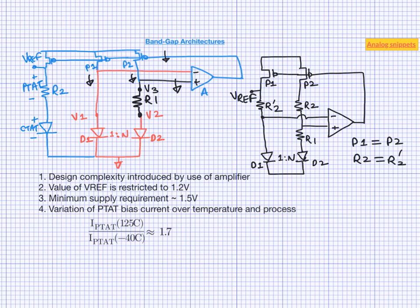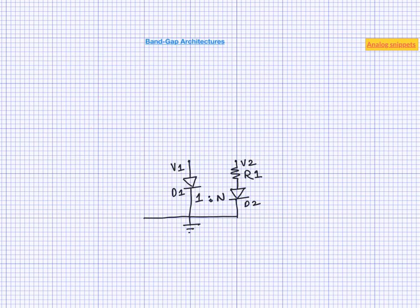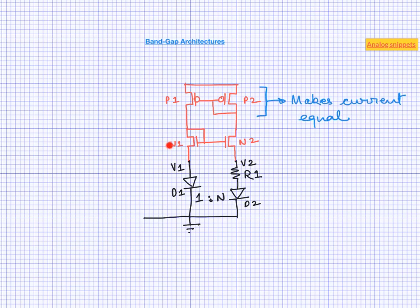If design complexity and area increase due to the amplifier is your main concern, there is another architecture to consider. Recall that for this circuit to work, the voltage across and current into both branches must be equal. One way to ensure this is with a current conveyor. A current mirror formed by pMOS transistors P1 and P2 ensures equal currents in both branches. The nMOS transistors share the same gate voltage and carry the same current, giving them equal gate-to-source voltages and therefore making V1 and V2 equal, provided P1 and P2 are equal in size, and likewise N1 and N2.